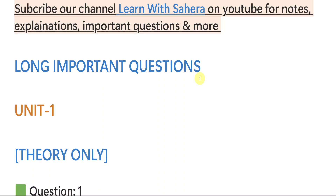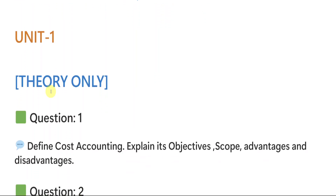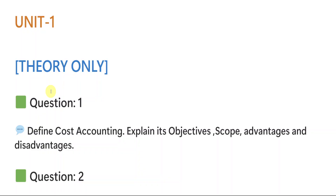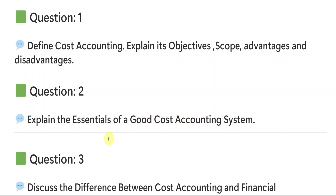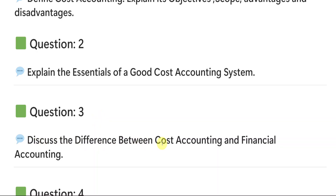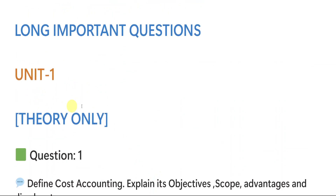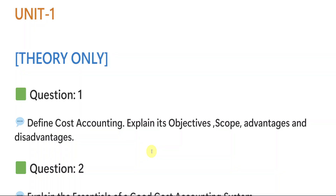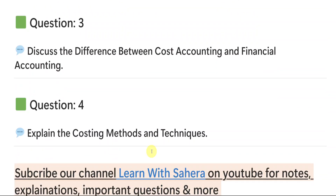Unit number one is purely based on theory — you will not see any problems from unit one. The questions I'm giving from unit one are: Question 1 — Define cost accounting and explain its objectives, scope, advantages, and disadvantages. Question 2 — Explain the essentials of a good cost accounting system. Question 3 — Discuss the difference between cost accounting and financial accounting. Question 4 — Explain the costing methods and techniques. Only these four questions are enough from unit one to get full marks on the ninth question of your paper.